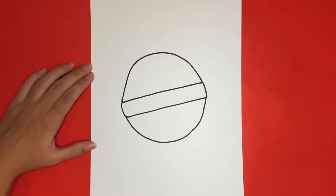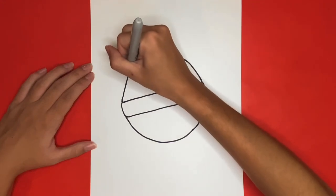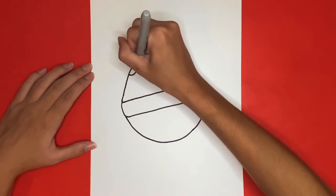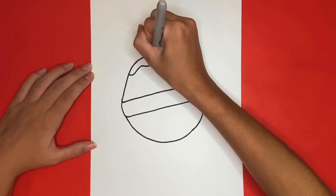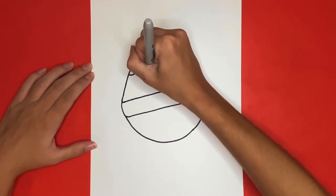Awesome job! Now we are going to draw some shapes inside of our bath bomb for detail. You can follow us and draw your shapes where we draw ours or you can draw yours wherever you would like. Also if you want to, you can draw different shapes as well.